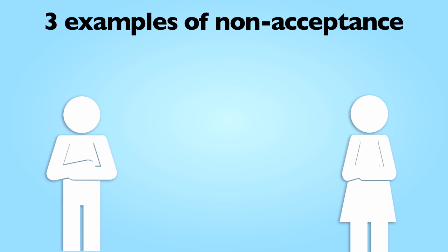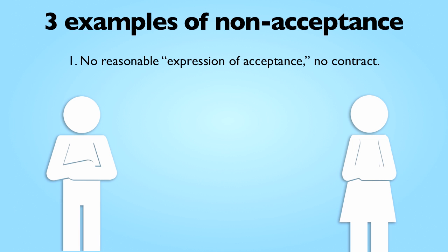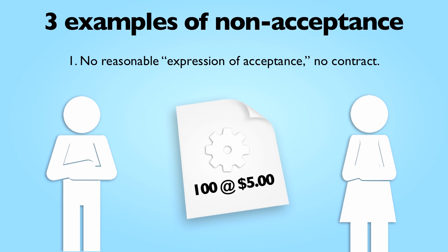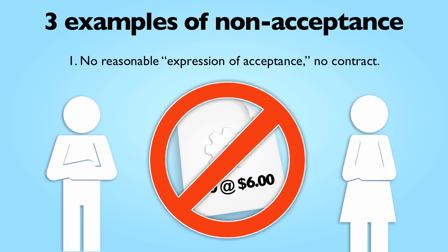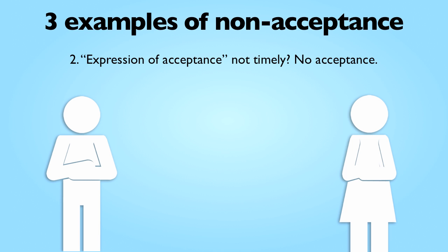There are three important instances in which a written response to an offer will not operate as an acceptance. First, if the response cannot be reasonably viewed as an expression of acceptance, it will not result in a contract. For example, if the buyer sends the seller a purchase order for 100 widgets at $5 per widget, and the seller responds that it will sell 100 widgets at $6 per widget, the seller's response is not a definite and seasonable expression of acceptance — it is a counteroffer. The second situation is where the acceptance is not seasonable, in other words, not timely.